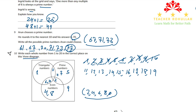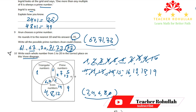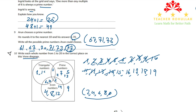Continuing: 11 is only prime. 12 is only even. 13 is only prime. 14 is only even. 15 is only triangular. 16 is only even. 17 is only prime. 18 is only even. 19 is only prime. 20 is only even. All numbers from 1 to 20 are now placed correctly in the Venn diagram.